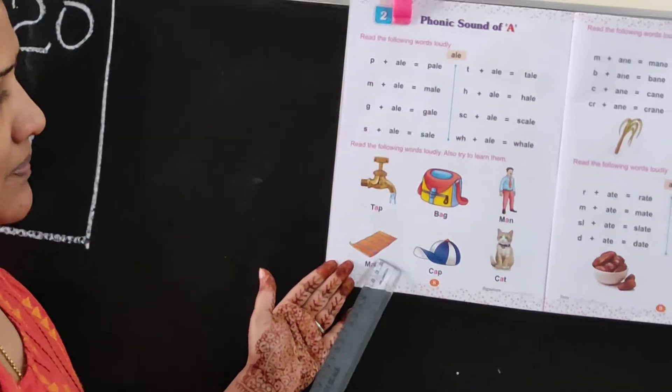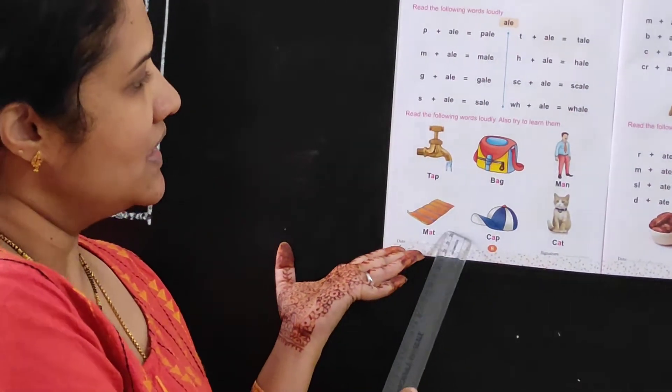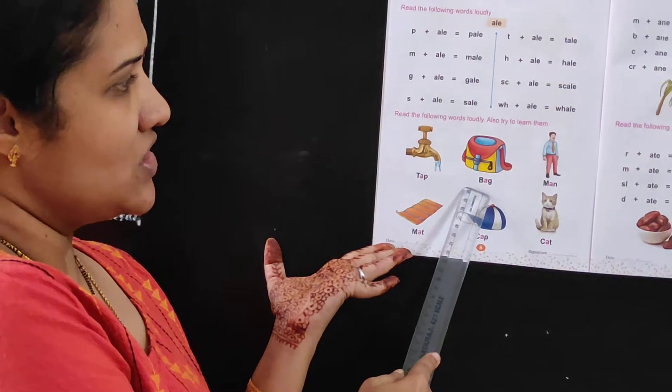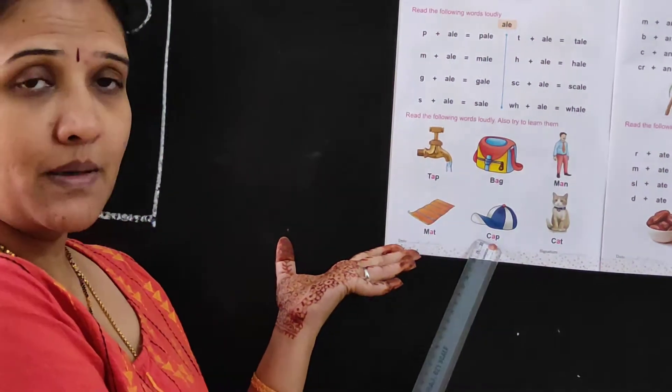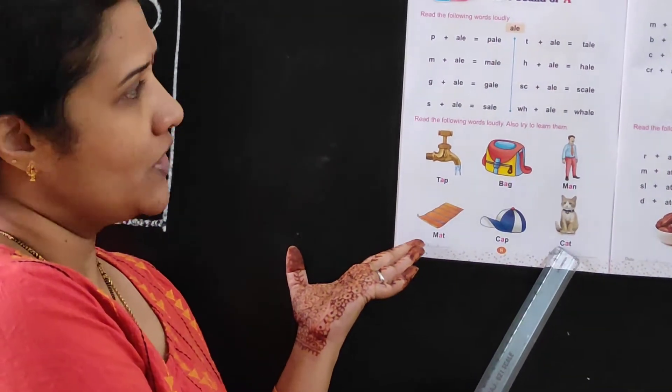Now let's see these previously you have learned, three letter words. T-A-T, B-H-G, M-A-M, M-A-T-M-A-T, C-A-T-C-A-T.